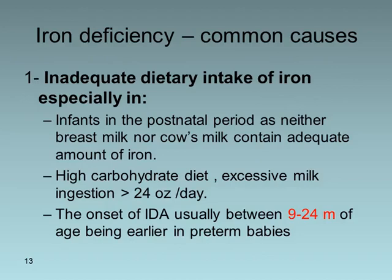The most important and commonest cause of iron deficiency anemia is inadequate dietary intake, especially in infants in the postnatal period, as neither breast milk nor cow's milk contains adequate iron. High carbohydrate diet and excessive milk intake — more than 24 ounces per day — are contributing factors. Onset typically occurs at 9 to 24 months of age, and earlier in preterm babies because their iron stores are much less than those of full-term babies.